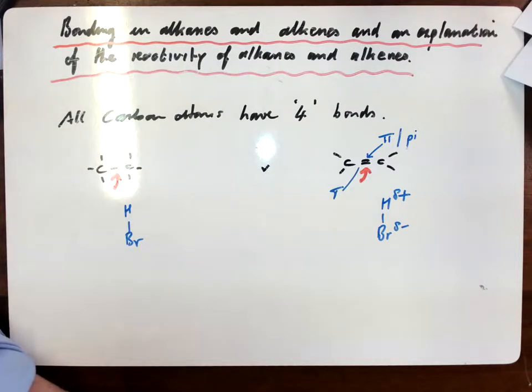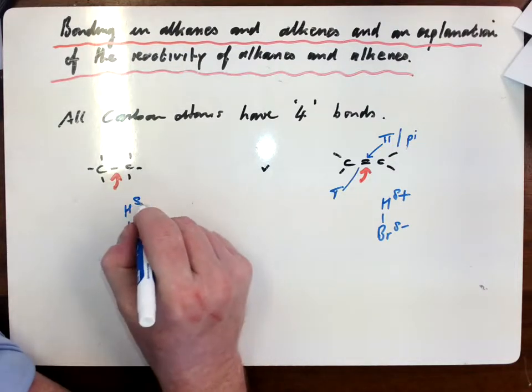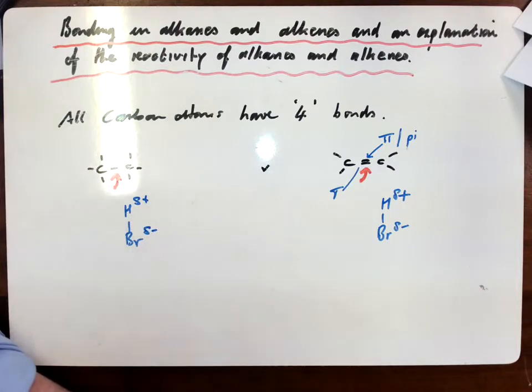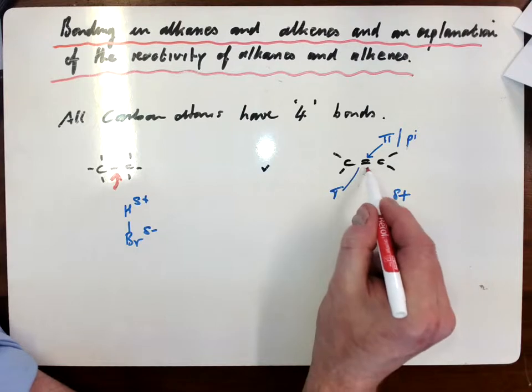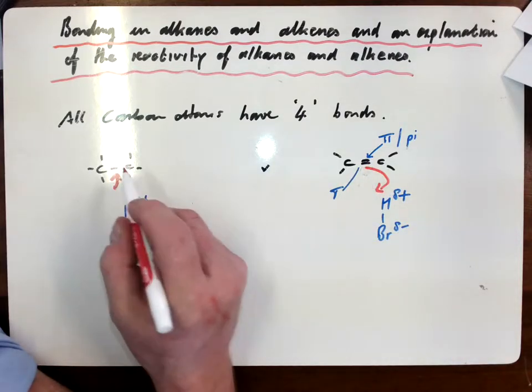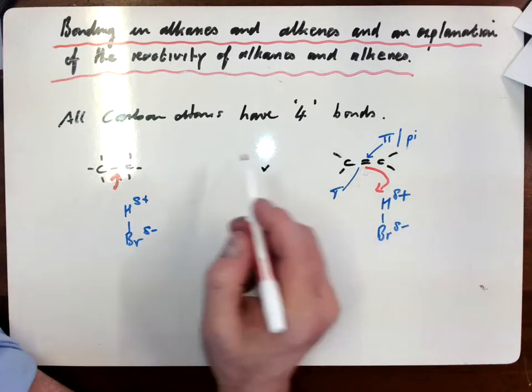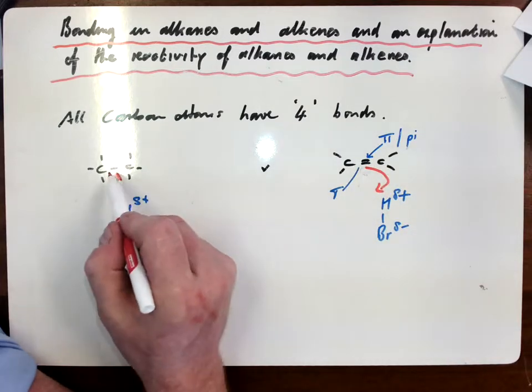So which of these two regions between the carbons would attract our electrophile more strongly and, therefore, allow it to be more reactive? Well, hopefully you realize that it's this region here, which is an area of higher electron density than this region here. We have four electrons in here because it's a double bond compared to two electrons here.